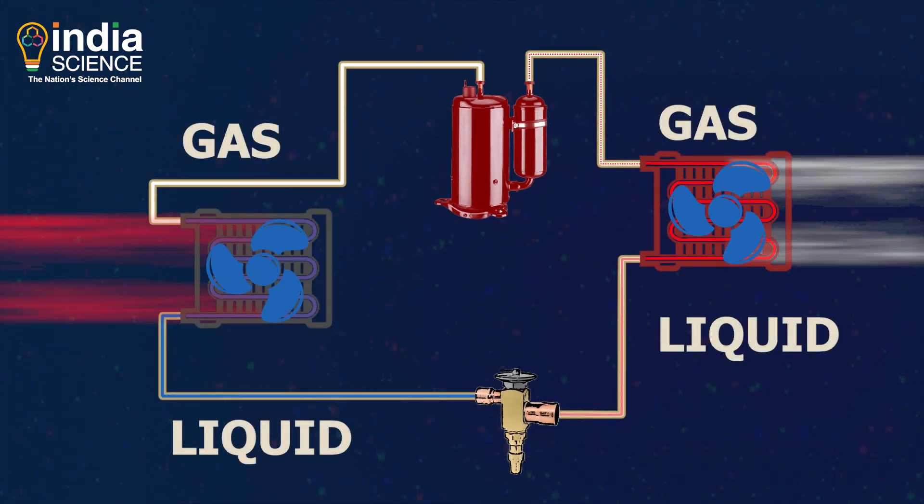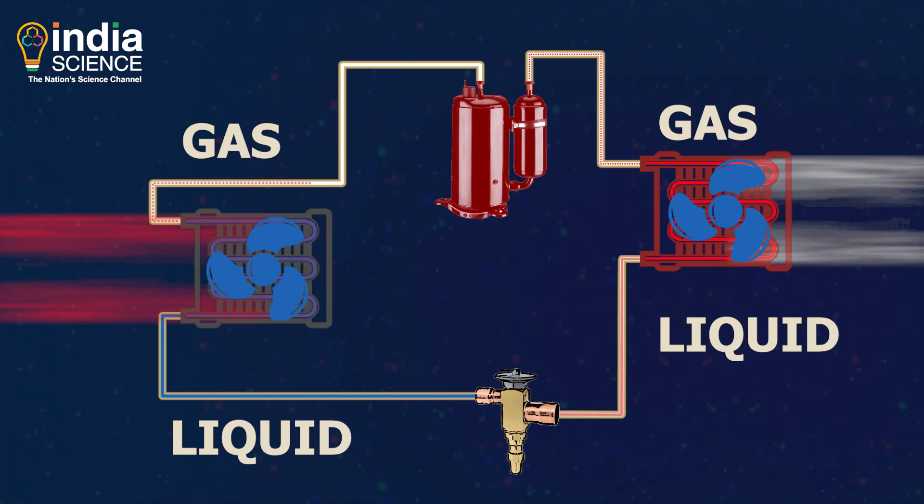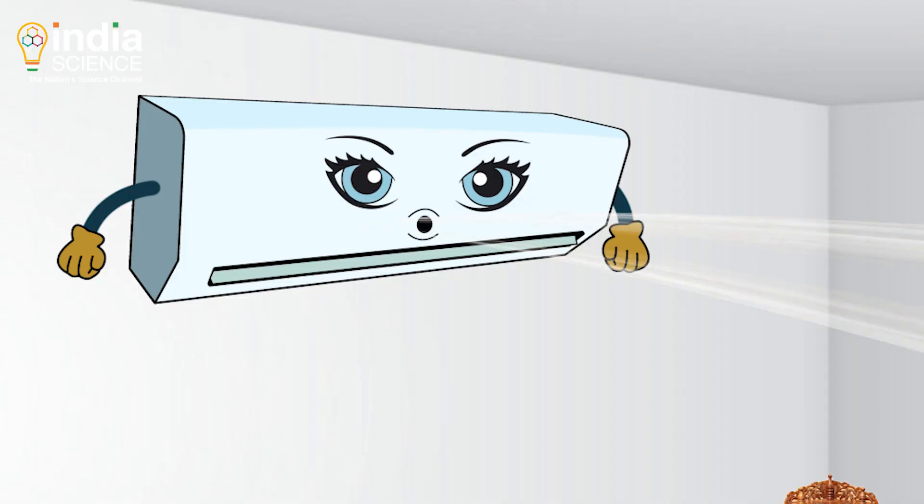Now, the hot gaseous refrigerant reaches the compressor and the process is repeated continuously in a closed loop and Miss Chill keeps cooling the room.